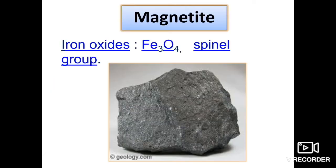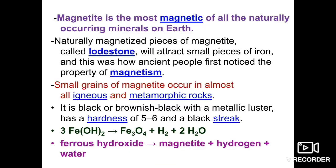The next mineral is magnetite. Magnetite is an iron oxide with formula Fe3O4 and is part of the spinel group of minerals. Magnetite is the most magnetic of all naturally occurring minerals on Earth — this is an important fact to remember.